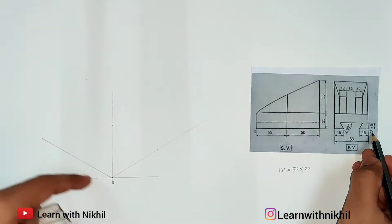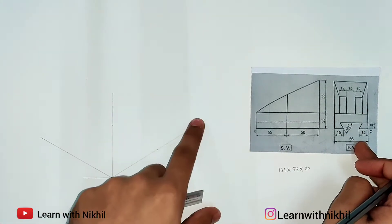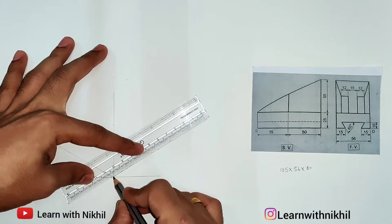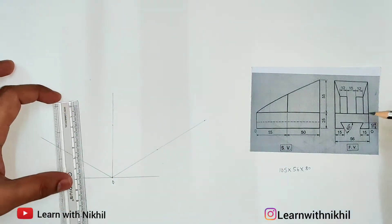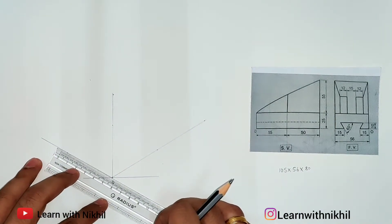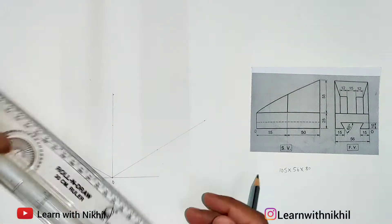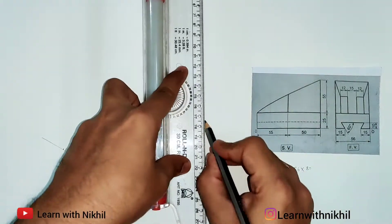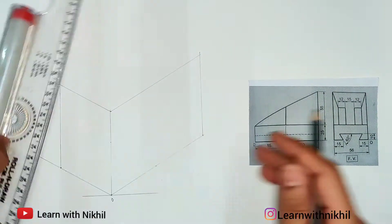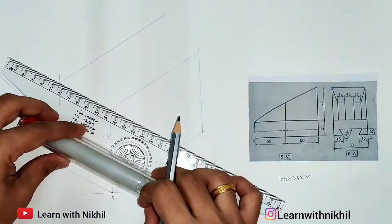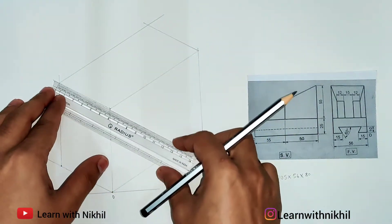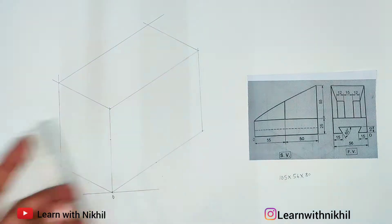This is the point O, the origin point. On the left side we have the front view and on this side we have the side view. The side view total width is 105, so I will mark 105 here. The height of the figure is 80, so I am marking 80, and the depth of the figure is 56 — that is the front view width. With these dimensions we will construct the rectangular box by drawing parallel lines through these three lines. Check after drawing the rectangular box whether the dimensions are properly marked before proceeding.